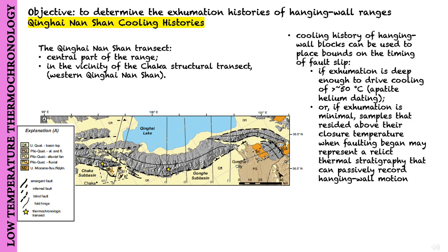The cooling history of hanging wall blocks can be used to place bounds on the timing of fault slip. If exhumation is deep enough to drive cooling of more than around 50 degrees Celsius, or if exhumation is minimal, samples that resided above their closure temperatures when faulting began may represent a relict thermal stratigraphy that can passively record hanging wall motion.